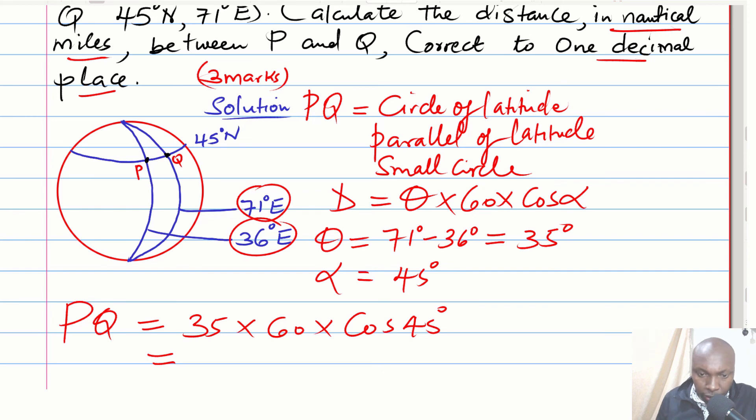Working this out using a calculator, correct to one decimal place, you get 1484.9 nautical miles. That is how you solve this question to obtain the three marks.